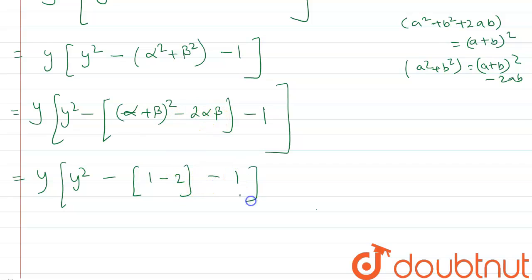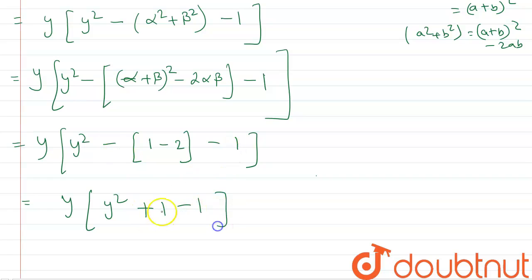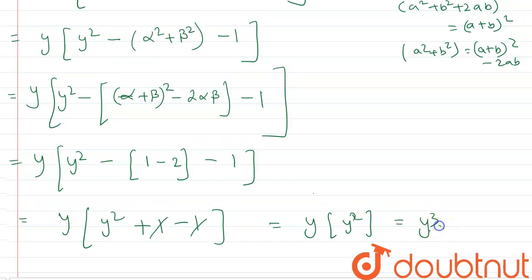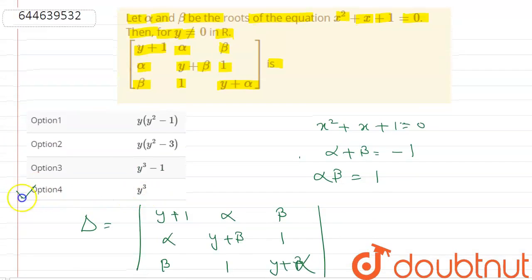Simplifying: y·[y² + 1 - 2 - 1 + 1] = y·y² = y³. The -1 and +1 cancel, leaving y·y² = y³. So the determinant equals y³, which means option 4 is the correct answer. Thank you.